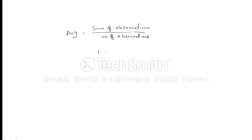Let's consider one small example. If I want to calculate the average of 1, 2, 3, 4, and 5, we use the first process. Average means sum of observations — total we have five observations, so 1 plus 2 plus 3 plus 4 plus 5 gives us 15, divided by 5, which equals 3. So 3 is the average of 1, 2, 3, 4, 5.